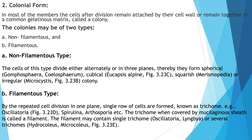In the non-filamentous type, cells divide either alternately or in three planes, thereby forming spherical, cubical, squarish, or irregular colonies. In the filamentous type, by repeated cell divisions in one plane, a single row of cells is formed known as a trichome — for example, Oscillatoria and Spirulina. When the trichome is covered by a mucilaginous sheath, it is called a filament. The filament may contain a single trichome or several trichomes.